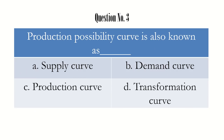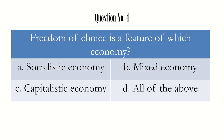Question number 3: the production possibility curve is also known as dash. This is a knowledge-based question — there is nothing to apply here. The answer for this is transformation curve. It is definitely not supply curve, demand curve, or production curve.